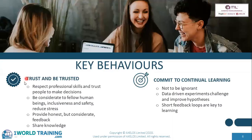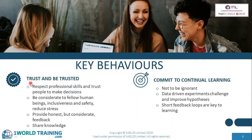Trust and be trusted means: respect professional skills and trust people to make decisions; be considerate to fellow human beings; inclusiveness and safety; reducing stress; provide honest but considerate feedback; and sharing knowledge. These are the elements of trusting and being trusted.